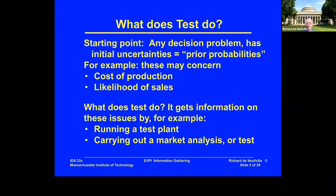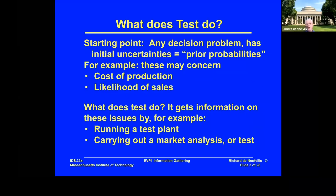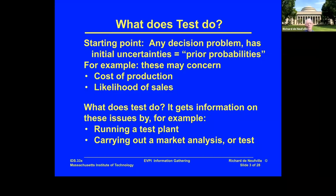At the starting point of any decision problem — even something like turning left while driving a car — you have uncertainties and some assessment of them. These are known as prior probabilities. They are called 'prior' to distinguish them from what you might have after a test. For example, if you're running a business, you have some measure of the cost of production per unit and some measure of the likelihood of sales. That's what you're starting with.